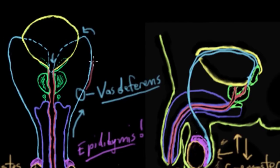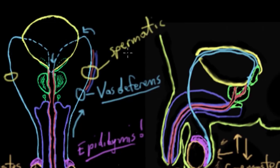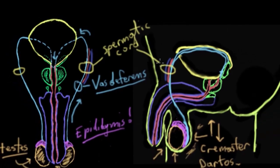Now the vas deferens actually runs within a bundle called the spermatic cord. Inside the spermatic cord you actually have an artery that serves the testes and you also have a vein that serves the testes. All of that together, and you have that on either side, that's called the spermatic cord.